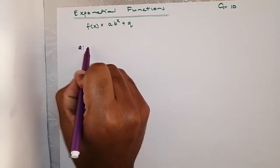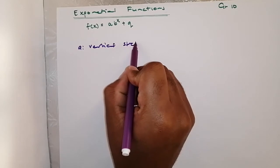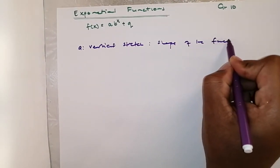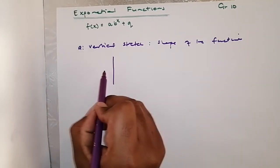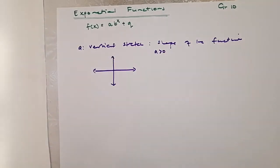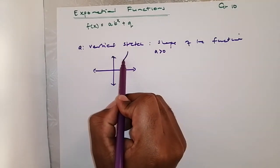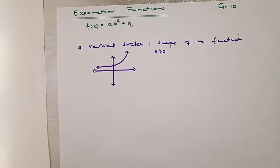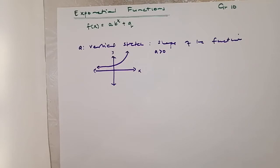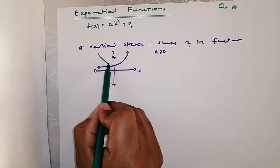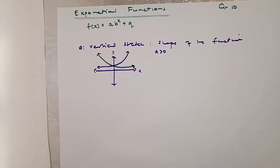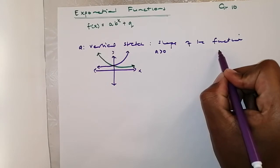First of all, the value of 'a' is the vertical stretch — it governs the shape of the function. If 'a' is positive, our function will increase in the typical exponential curve shape. You might also find instances where 'a' is positive but the function is reflected, like a reflection on the y-axis.